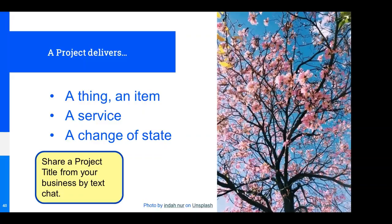The third thing a project can deliver is a change of state. For example, you want to get a quality accreditation for your company. The company applies, does all the work, goes through the examination, gets the report, and receives a certificate saying you've got it. The difference between before and after is the state — you've changed from not being recognized for quality to being recognized.